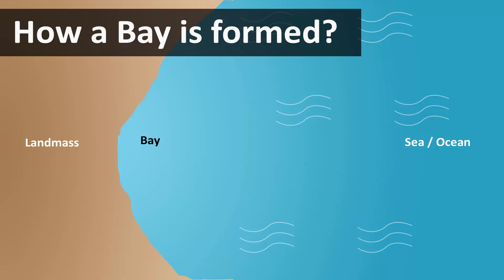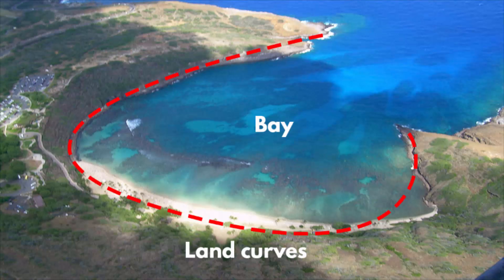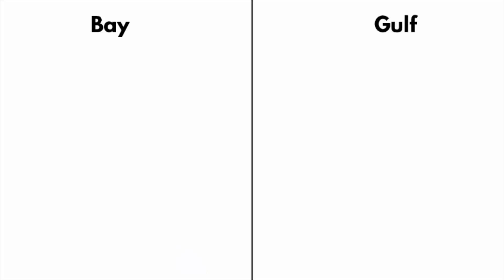In this video, we will learn how a bay is formed. A bay is a broad inlet of the sea where the land curves inward. A bay can also be called a gulf.